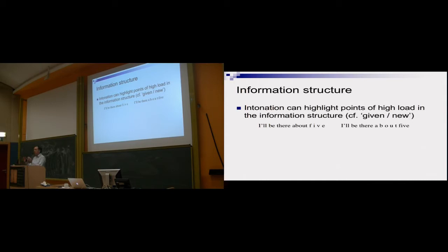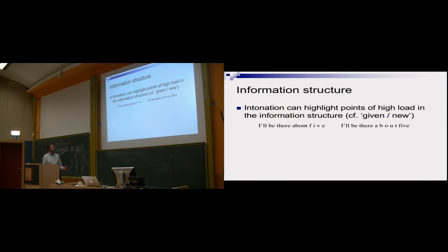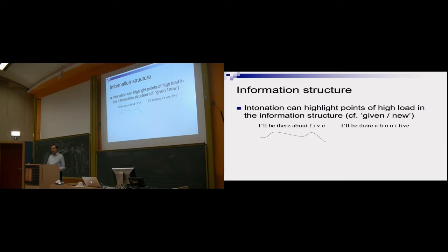Another thing that intonation buys you is highlighting bits of information that are important, often in contrast but not necessarily. So if somebody's talking to you about an arrangement at the railway station to catch a train, you might say, I'll be there about five. If they then say, okay, I'll book two tickets on two minutes past five train, you might say, I'll be there about five. I said about five. So you shift the intonation nucleus, the main stress, if you like, from the last word, the last content word, very often is by default, to the word that you're contrasting.